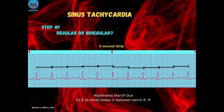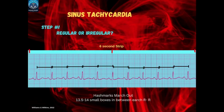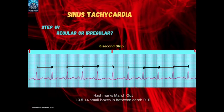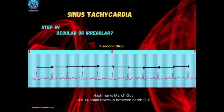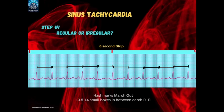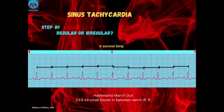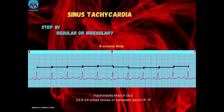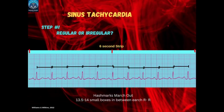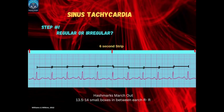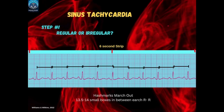Let's do a practice strip. To interpret sinus tachycardia on an ECG strip, our first step is always to determine whether the rhythm is regular or irregular. The key is the R-to-R interval — the time between two consecutive R waves representing ventricular depolarization. In sinus tachycardia, these R-to-R intervals should remain consistent. You can check regularity by marking the distance between two R waves using paper or calipers and moving across the strip. Slight variations of up to one to two small boxes are considered normal; variations exceeding two small boxes indicate an irregular rhythm. In this example, the R-to-R intervals are approximately 14 small boxes apart, confirming a regular rhythm consistent with sinus tachycardia.